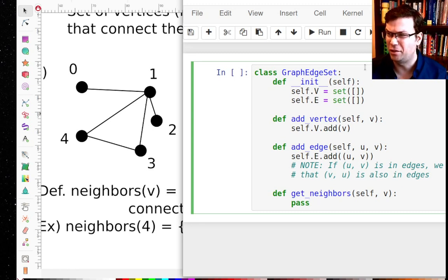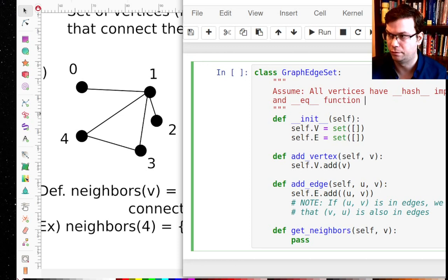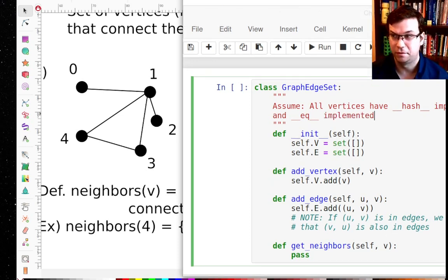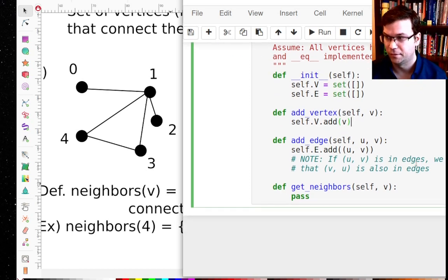I should say we're assuming that all vertices have a hash function implemented and the equality function implemented, because that's what we need for a set, for these to be sets. But certainly numbers have that, but this graph class is more general. I could store strings in it that represent the nodes. I could store other objects as long as I've defined hash and equality.